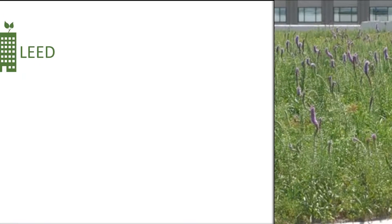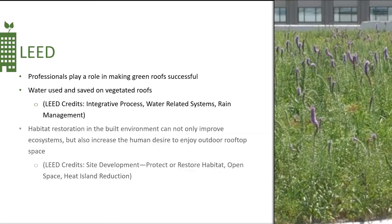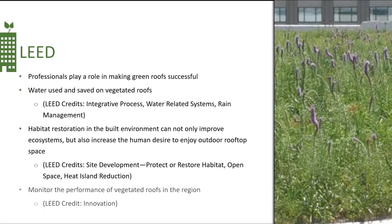LEED and USGBC: a holistic approach to design is key to a successful, resilient green roof. A variety of professionals play specific roles in making green roofs successful, and communication is essential. For example, water used and saved on vegetated roofs — we can look into the LEED credits for integrative process, water-related systems, and rain management could be used in the narrative. Habitat restoration in the built environment can not only improve the ecosystems but can also increase the human desire to enjoy the rooftop space. We can look into LEED credits such as site development, protecting and restoring habitat, open space, and heat island reduction. Monitoring the performance of vegetated roofs in the region can earn an innovation credit as well.